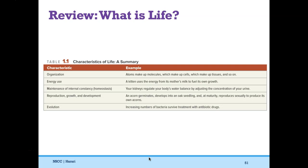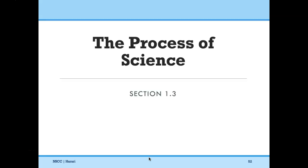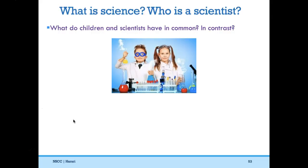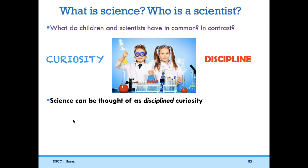What is science and who is a scientist? An interesting question: what do children and scientists have in common, and what do they have in contrast? One thing both have in common is curiosity — children are very curious and so are scientists. What do they have in contrast? Discipline. Children are not very disciplined, but a scientist is, as a requirement, very disciplined. We can think about science as disciplined curiosity.